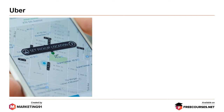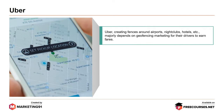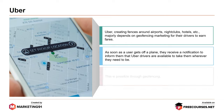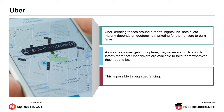Next, Uber. Uber, placing geofences around airports, nightclub hotels, etc., majorly depends on geofencing marketing for their drivers. As soon as a user gets off a plane, they receive a notification informing them that Uber drivers are available to take them wherever they need to be. This is possible through geofencing.